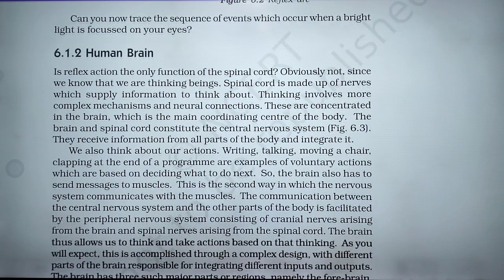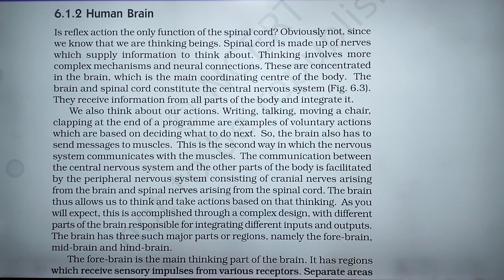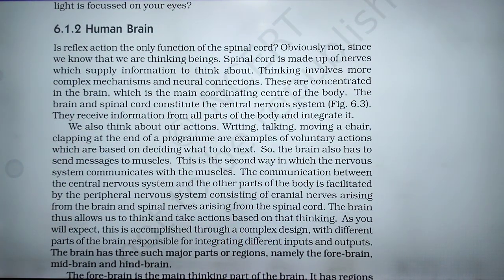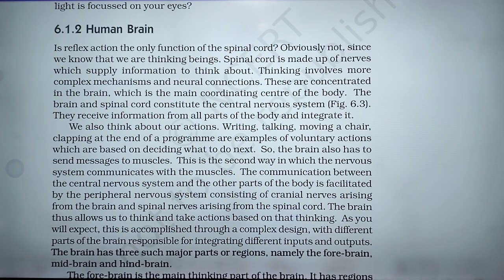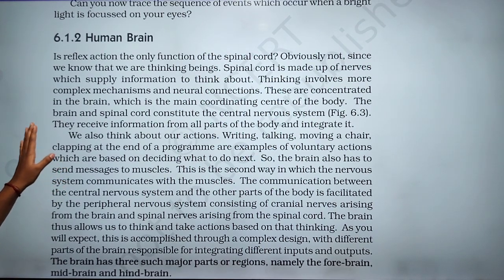The brain is the main coordinating center of the body. The brain and the spinal cord constitute the central nervous system. There is information from all parts of the body and the brain integrates it.